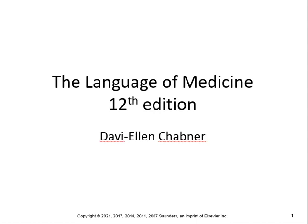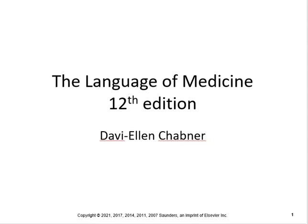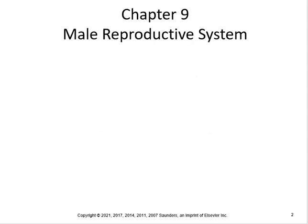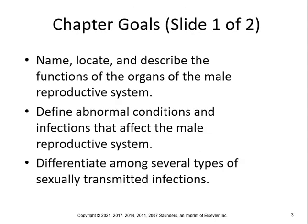Alright class, we're going to go on to the male reproductive system. The chapter goals are: name, locate, and describe the functions of the organs of the male reproductive system.